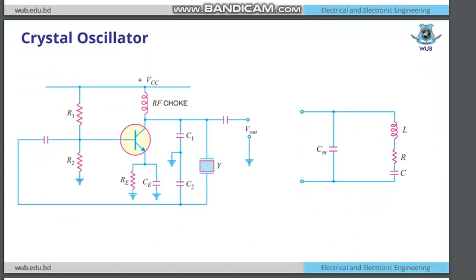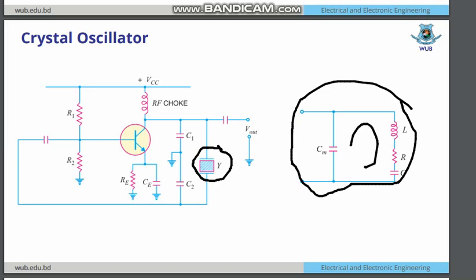That is the end of the Hartley oscillator. Now we are heading towards the crystal oscillator. Here it is quite similar to the Colpitts oscillator, but here we have used a crystal Y — that is going to be the combination of CM as a capacitor and LRC as a series LRC circuit. All connections are the same as the Colpitts oscillator, but remove the inductance part and replace it with the crystal Y circuit. That is the formation of a crystal oscillator.